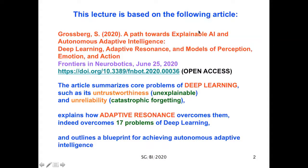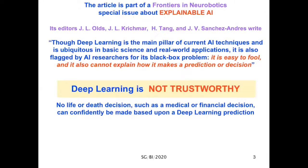This lecture is based on the following article published open access and on my web page. It summarizes core problems of deep learning, such as its untrustworthiness because it's unexplainable and unreliable because it experiences catastrophic forgetting. The article explains how adaptive resonance overcomes them, indeed overcomes 17 problems of deep learning, and outlines a blueprint for achieving autonomous adaptive intelligence.